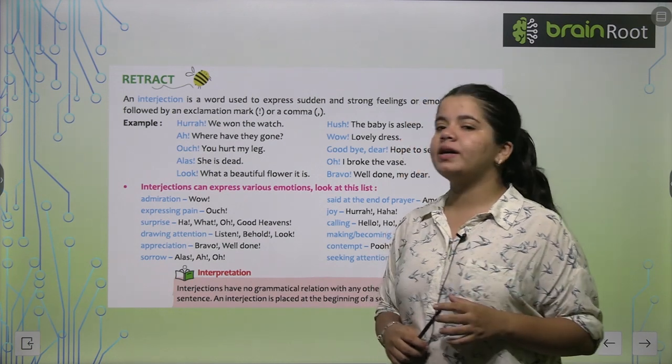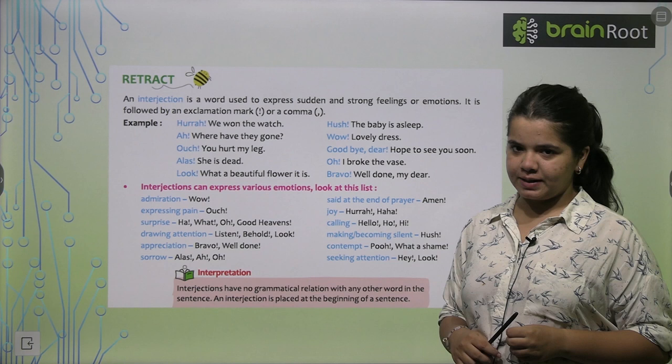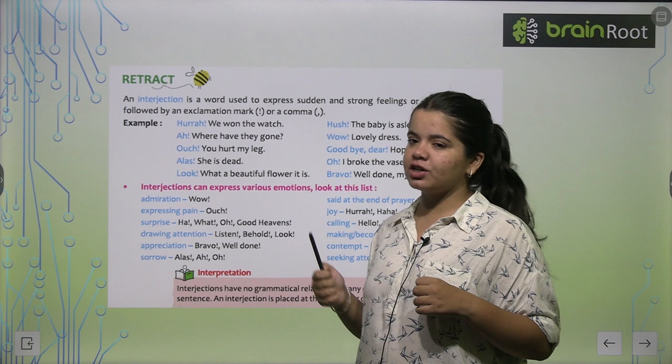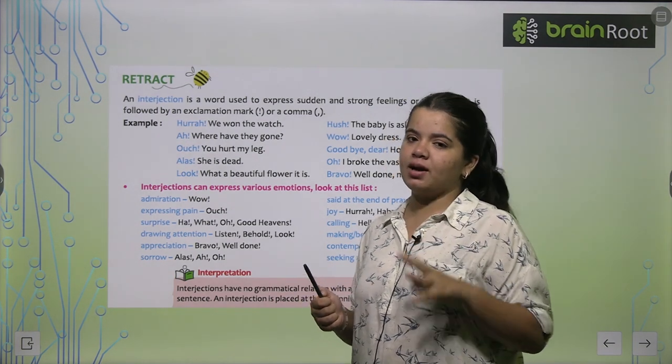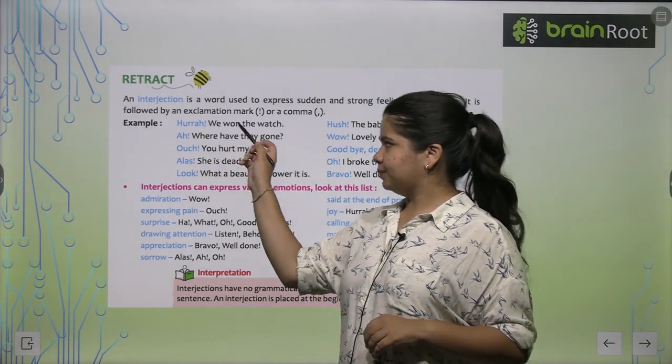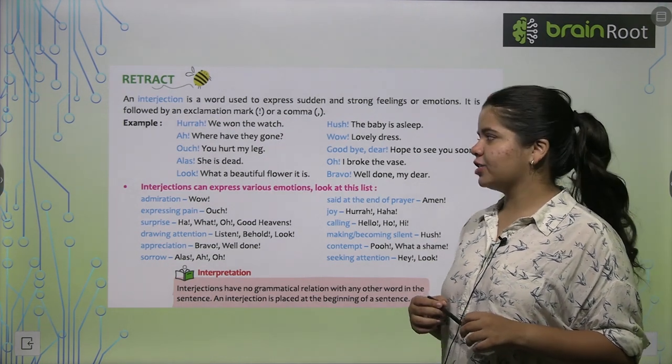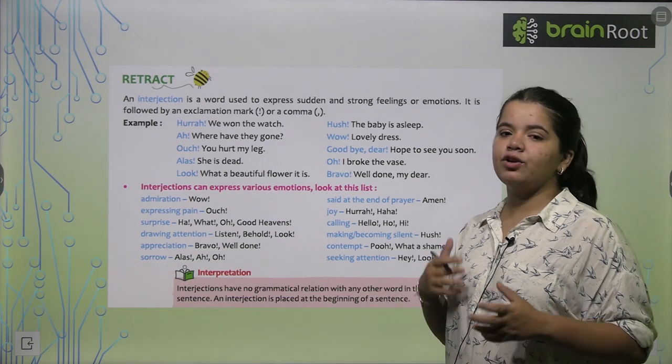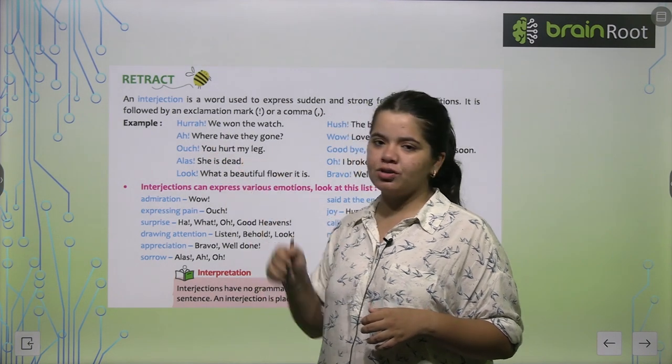An interjection is a word used to express sudden and strong feelings or emotions. It is followed by an exclamation mark or a comma. So interjection is a word that expresses a sudden feeling or emotion, and you should remember that whatever interjection is, it will end with an exclamation mark.